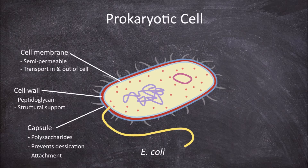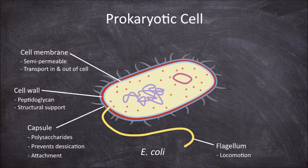At the end of the prokaryote there can be long extensions called flagellum. The function of the flagellum is in locomotion. On the surface, a prokaryote may have small hair-like extensions called pili, singular pilus.